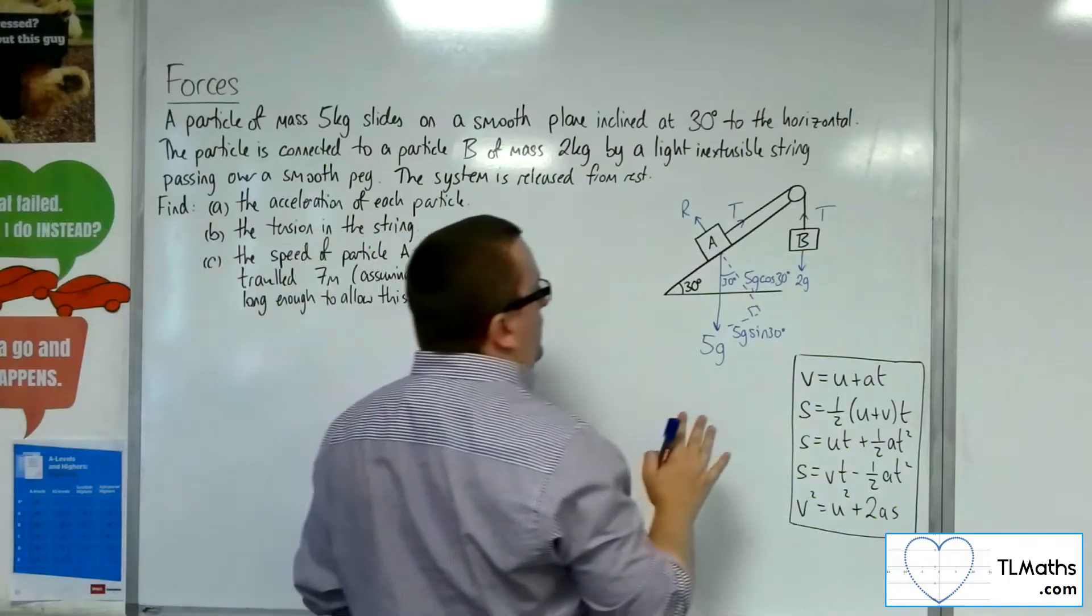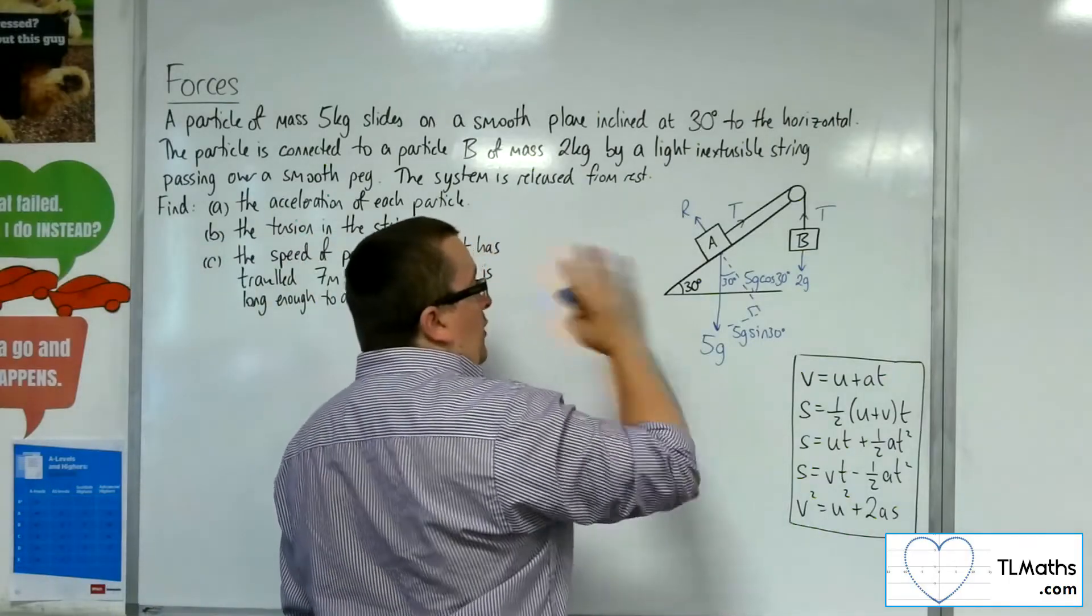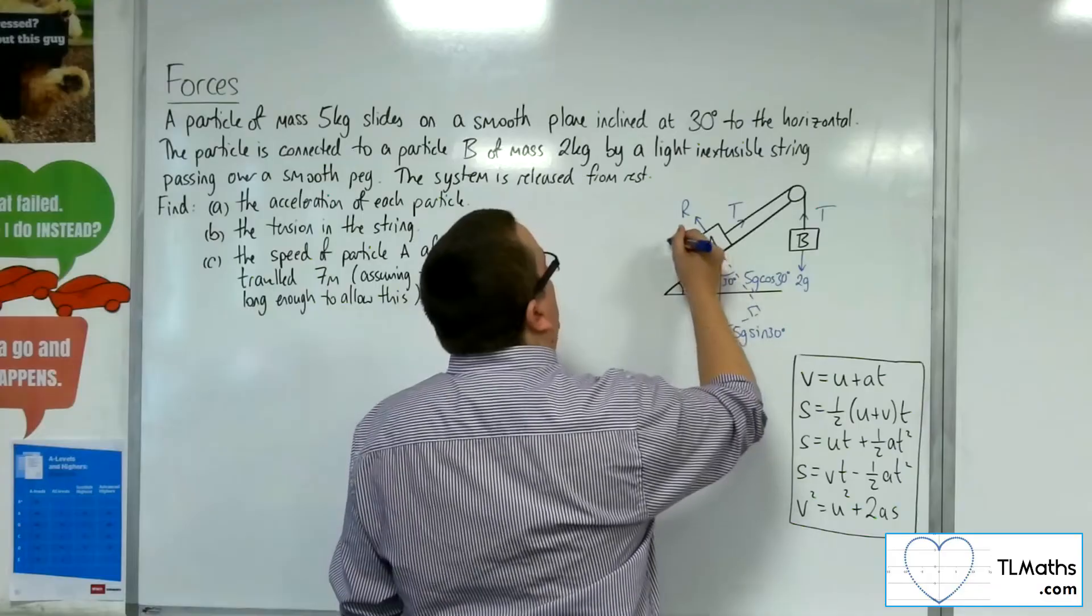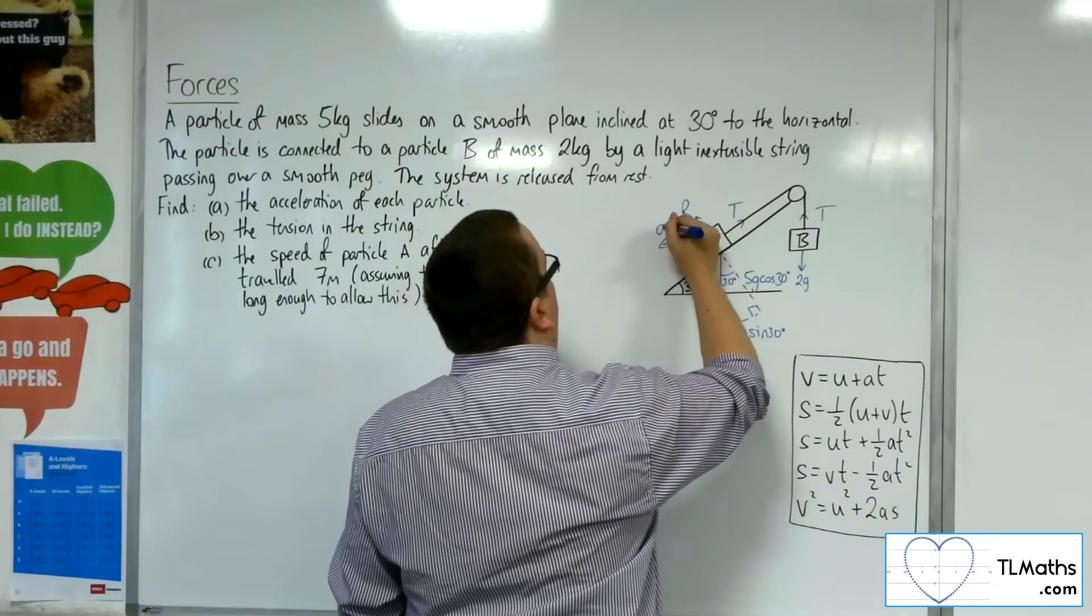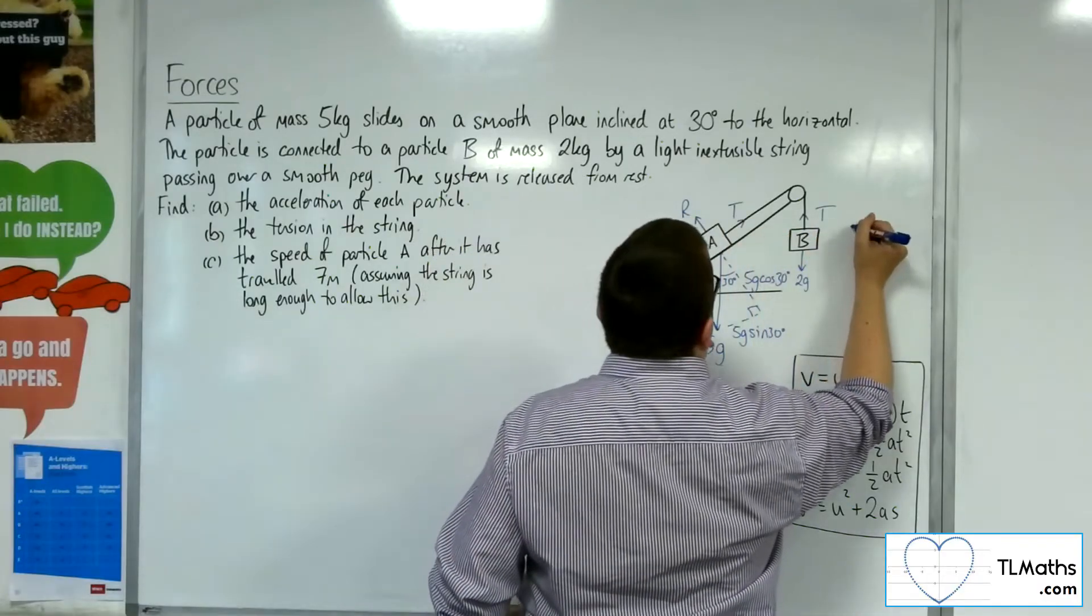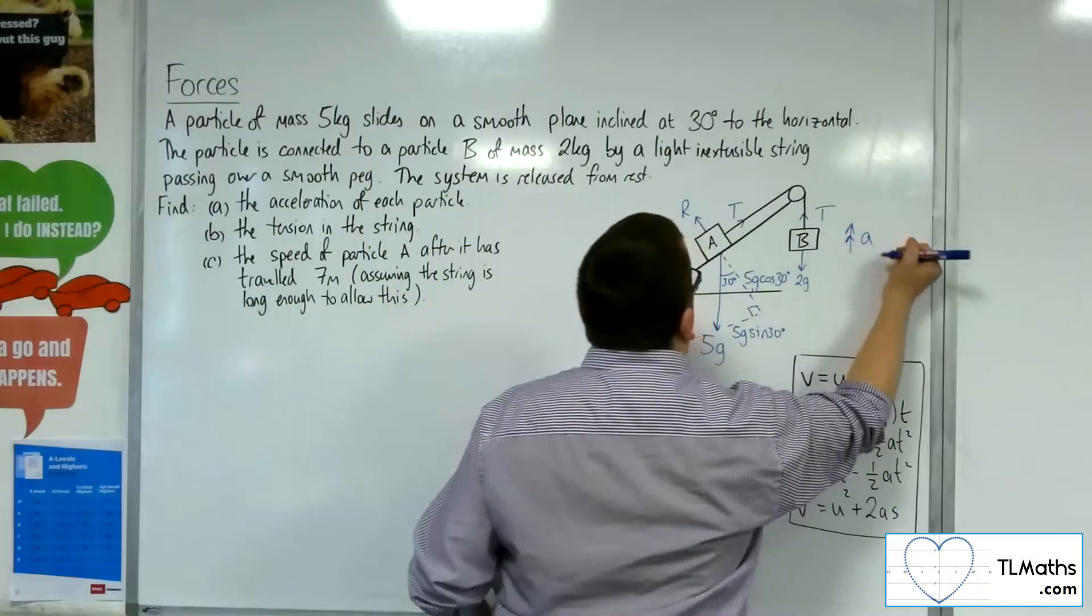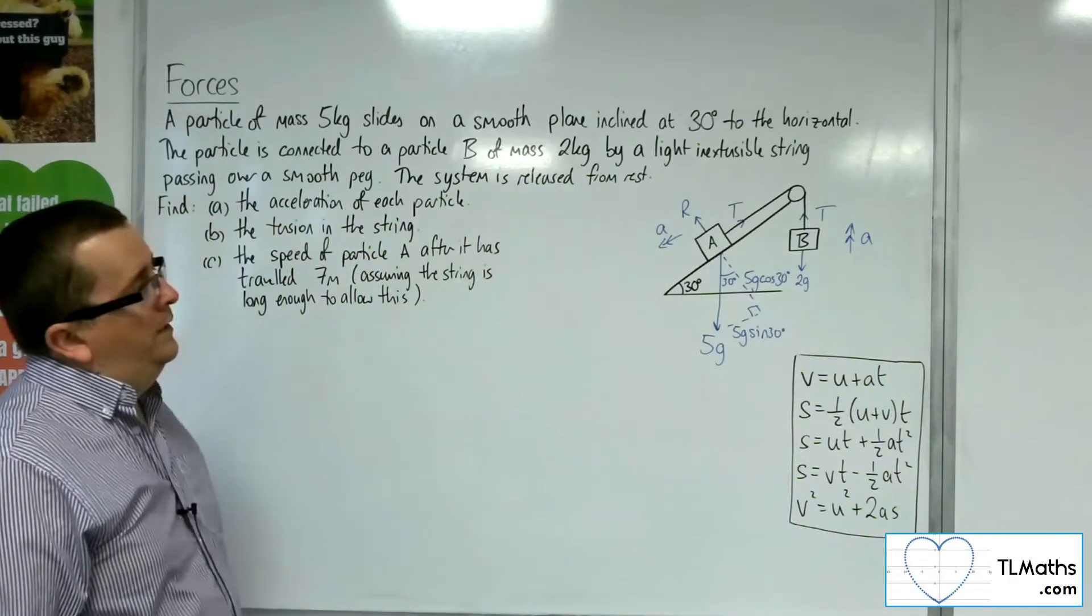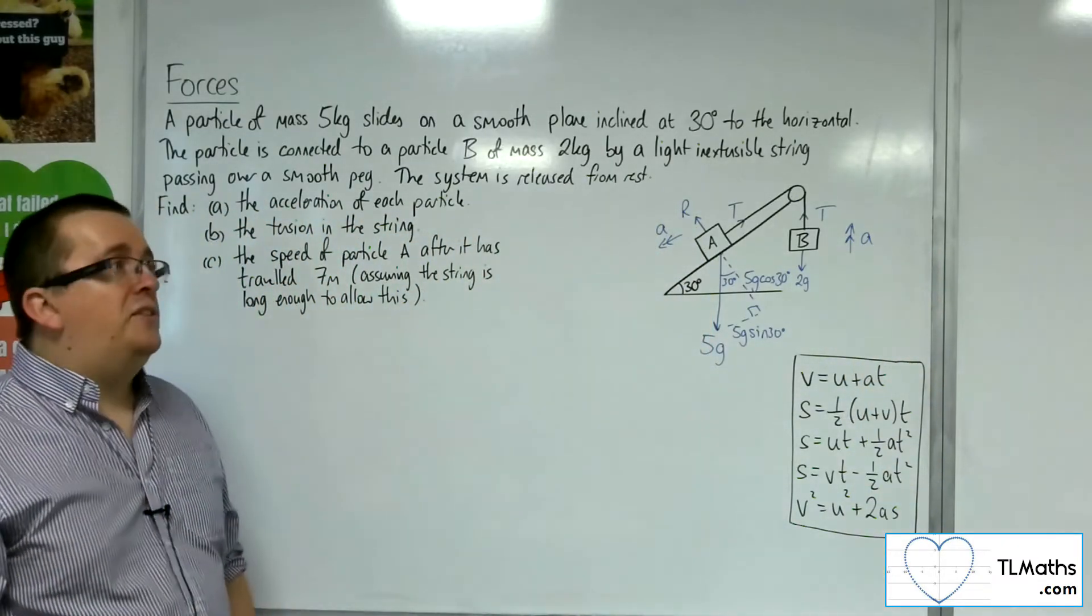Acceleration-wise, the slope is smooth, A is heavier than B, and so we're going to be accelerating down the slope, and B is going to be accelerating vertically upwards. So that's the situation as it stands.